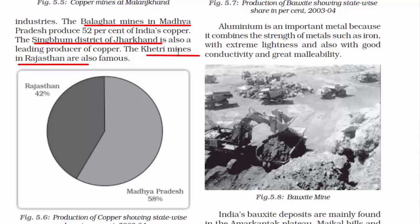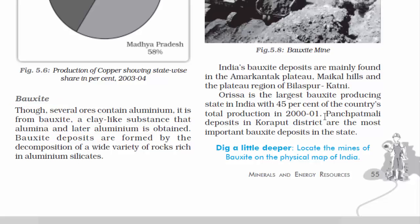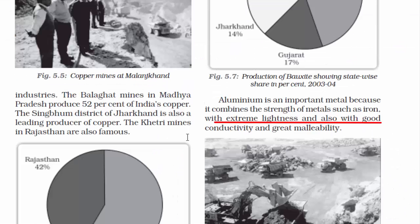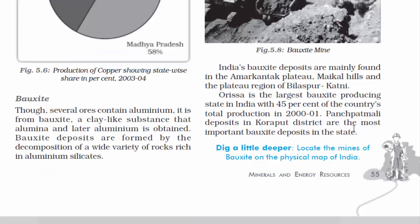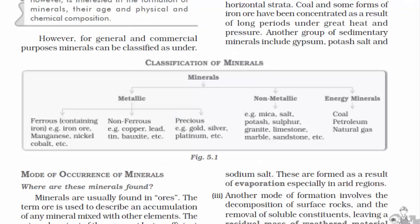The second non-ferrous mineral is bauxite. It is an ore of aluminium — from bauxite, a clay-like substance, alumina and later aluminium is obtained. Aluminium has good conductivity and great malleability, meaning it can be easily beaten into thin sheets. India's bauxite deposits are mainly found in the Amarkantak Plateau, Maikal Hills, and the plateau region of Bilaspur, Katni.